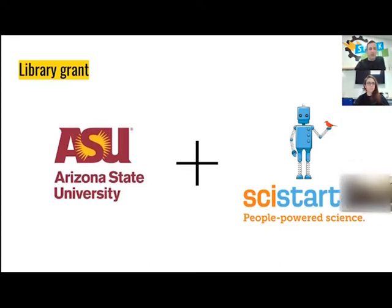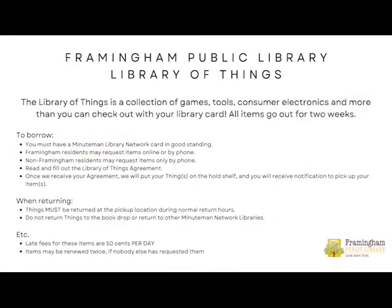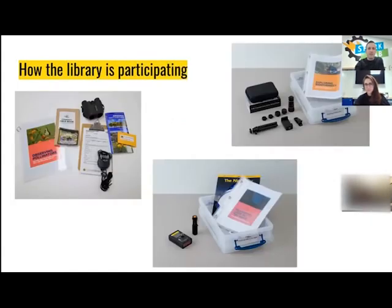The pollinators kit will be going out a little more in the spring; the other two you can get right now. They're going to be part of our library of things. For those who don't know, our library of things is a collection beyond just books and movies — we have everything from tents to Nintendo Switches to cake pans to gardening tools that you can check out for free with your library card. So these kits will integrate with what we're already doing. Here are some photos of the kits, and after the presentation I'll be showing them on camera.